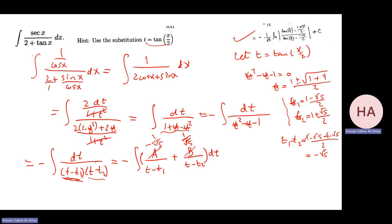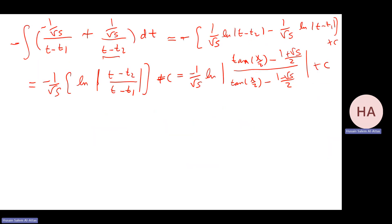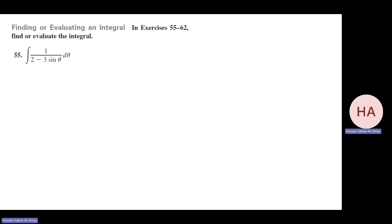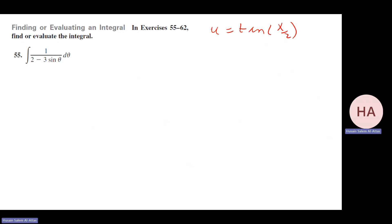These are the suggested problems for section 8.7 — problems 55 to 62 use similar formulas. Using u = tan(x/2) again for the next problem. Be careful with the substitution: tan(0) = 0 and tan(π/4) = 1, so the limits change from 0 to 1.